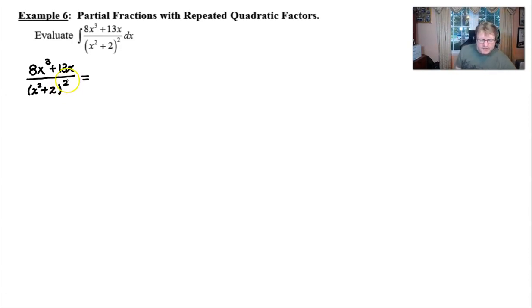Well, by virtue of the fact that we have this quadratic x squared plus 2 that technically is appearing twice, repeated a second time, we are going to use two of these fractions. The first denominator will contain the first power of that quadratic factor. And the second denominator would contain the square of that quadratic factor.